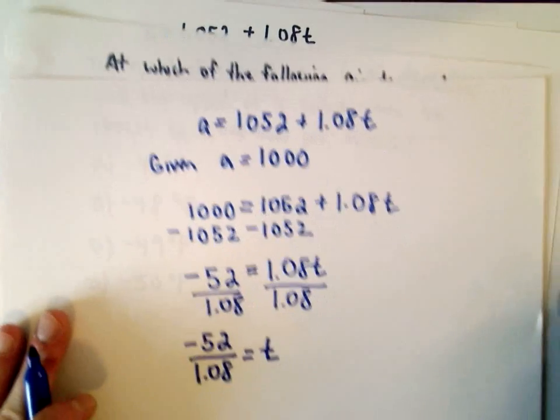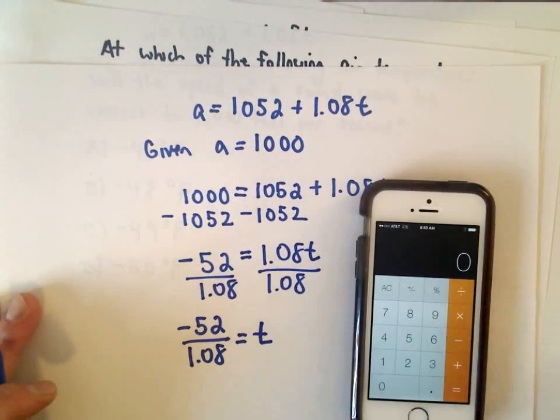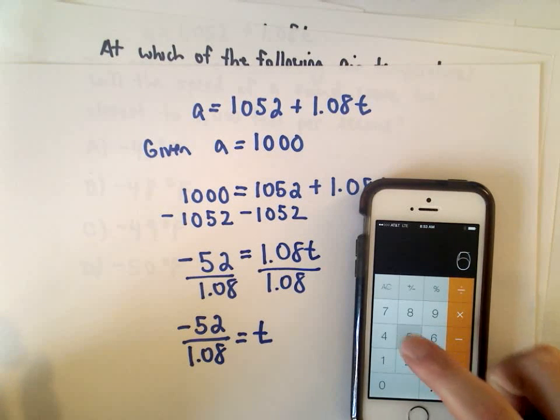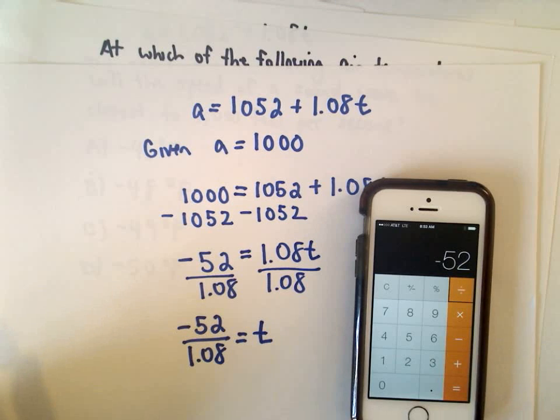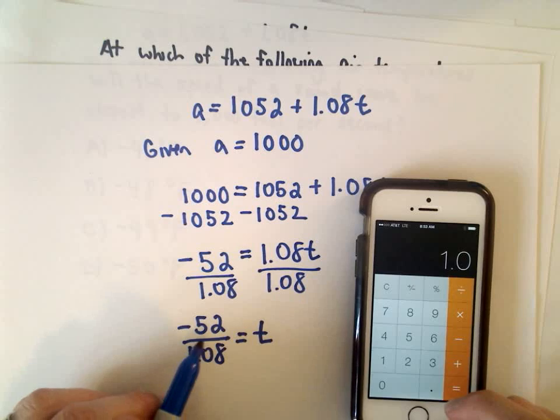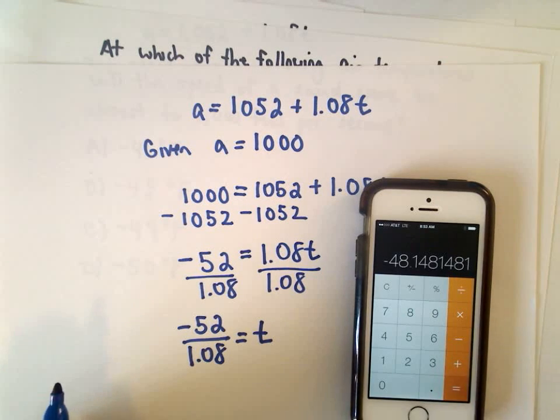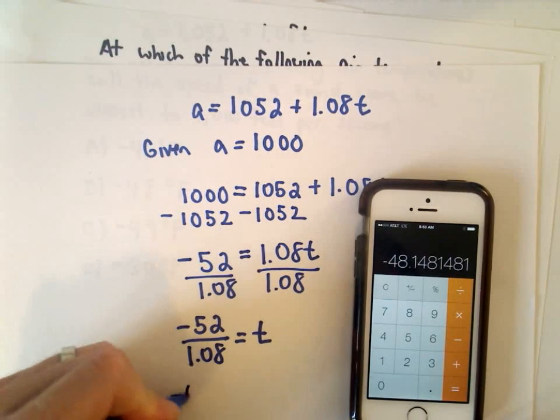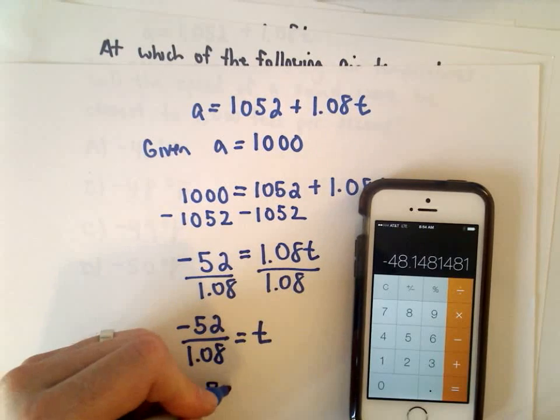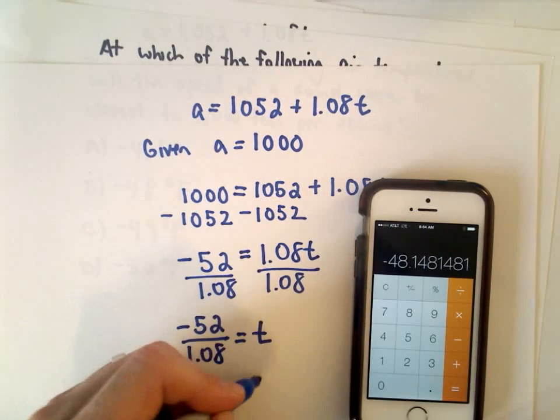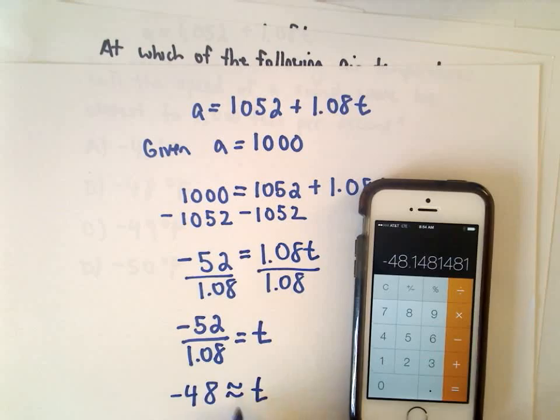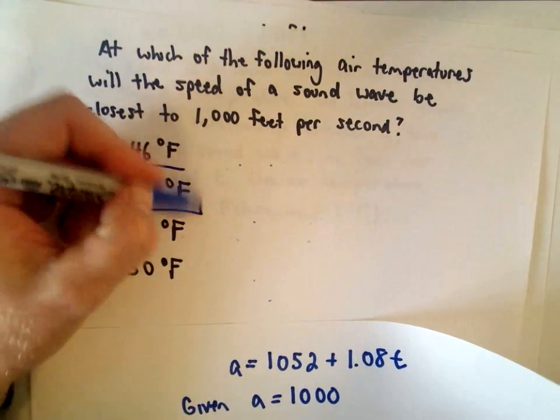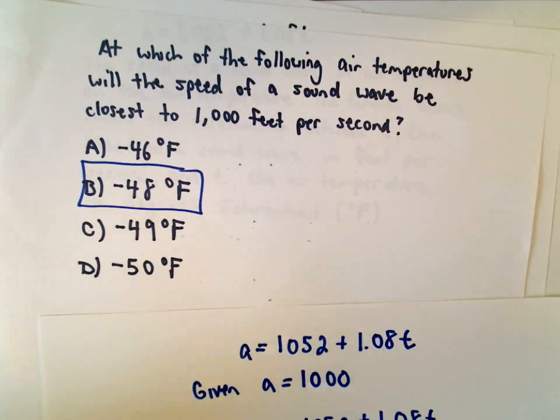And you're allowed to use a calculator. The only calculator I have handy here is my iPhone. I'm positive they're not going to let you use an iPhone in there, but this is pretty simple stuff on a calculator. So I did negative 52 divided by 1.08. And we're rounding it to the nearest temperature, so it's roughly equal to negative 48 degrees. That stands for approximately equal to. So the temperature should be roughly approximately equal to negative 48 degrees Fahrenheit. So answer choice B will be the correct choice here.